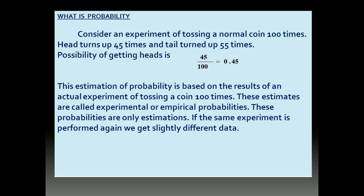So what is probability? If an experiment is conducted — for example, to toss a coin 100 times — and heads turned up 45 times and tails turned up 55 times, then the possibility of getting heads out of 100 times is 45. So it will be measured as 45 by 100, so the probability will be 0.45. This estimation of probability is based on the results of an actual experiment of tossing a coin 100 times. These estimates are called experimental or empirical probabilities.